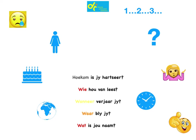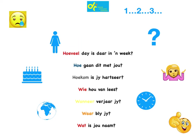'Hoekom is jy hartseer?' — Hoekom means 'why.' 'Hoe gaan dit met jou?' — Hoe means 'how,' as in 'How is it going with you?' or 'How are you?' 'Hoeveel dae is daar in a week?' — Hoeveel means 'how many.' And 'Waarheen gaan jy?' — 'Where are you going?' Waarheen and waar are similar but Waarheen is used to be more specific.